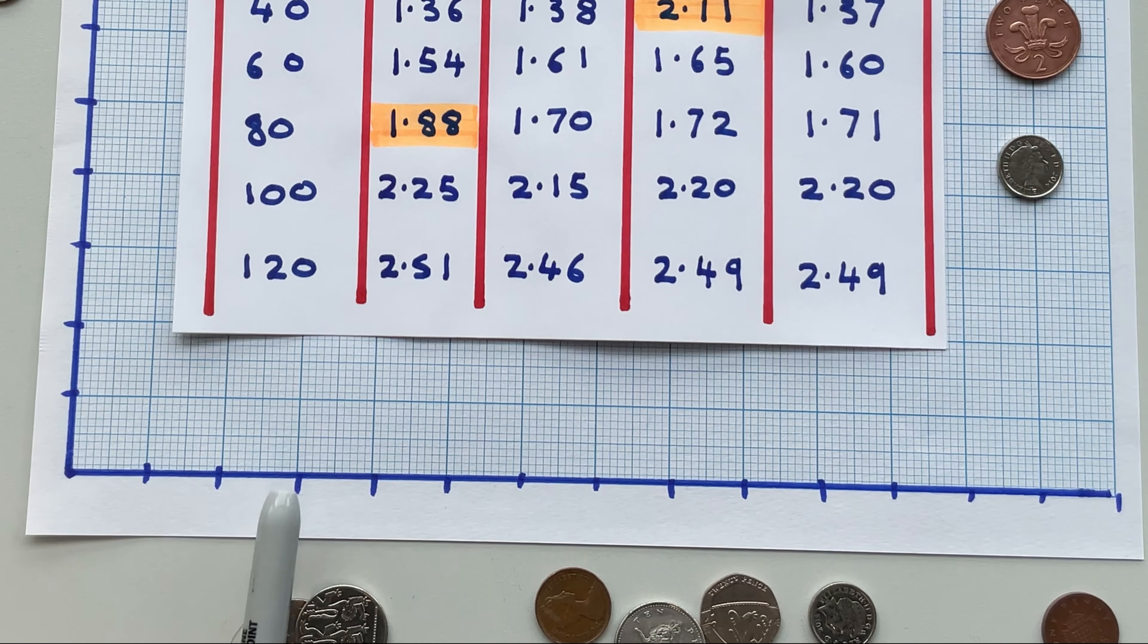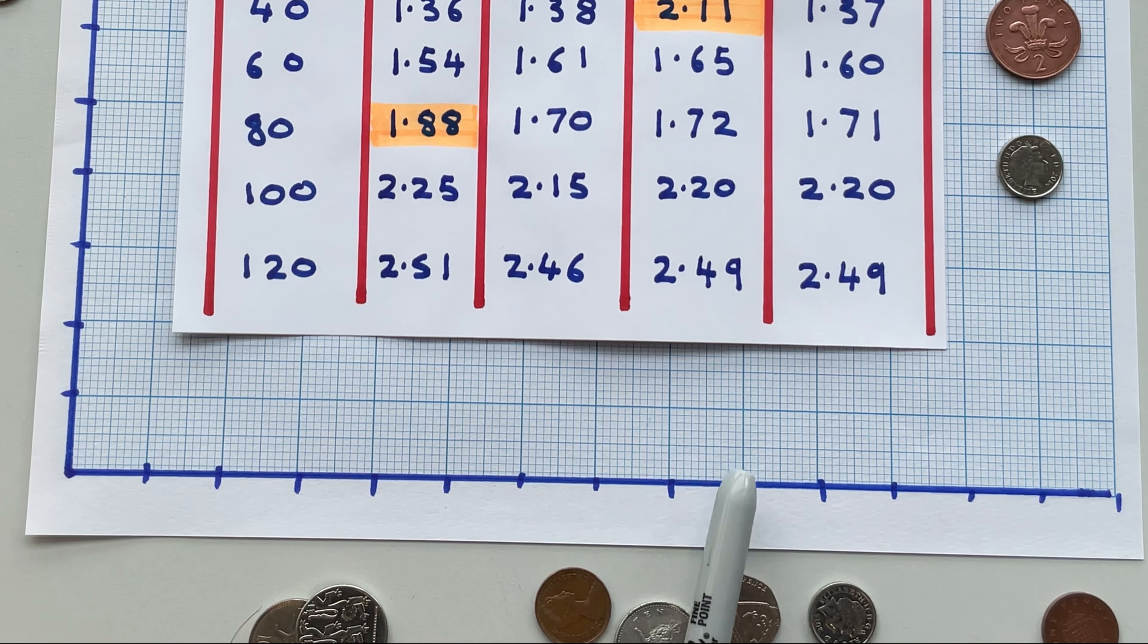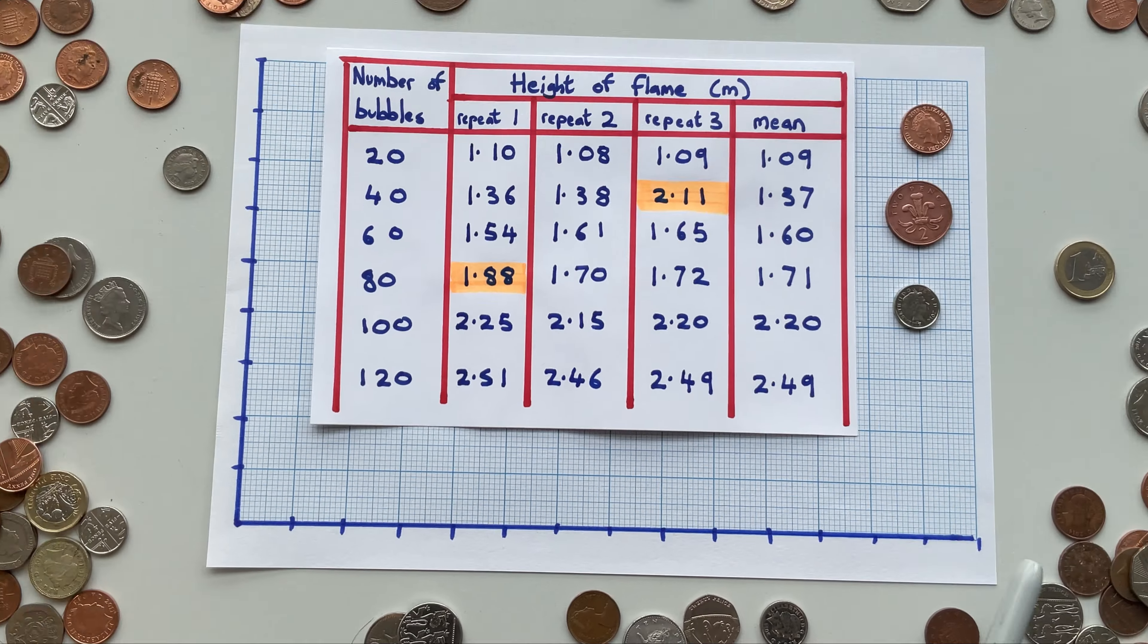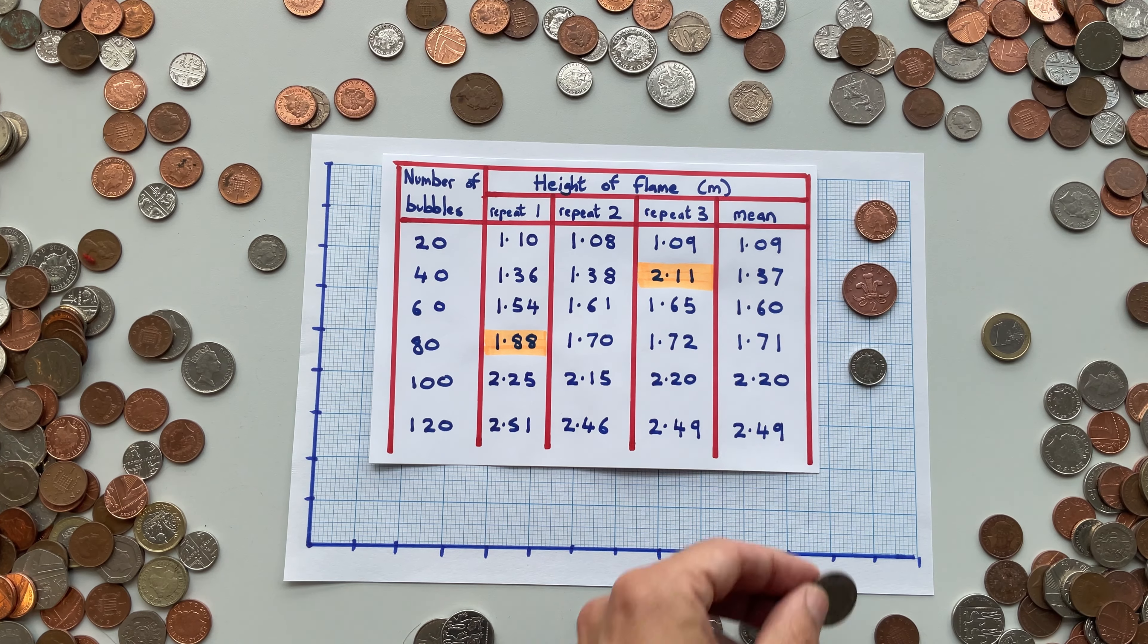Fives? 5, 10, 15, 20, 25, 30, 35, 40, 45, 50, 55, 60, 65, 70. Closer, but we haven't got to one hundred twenty yet.